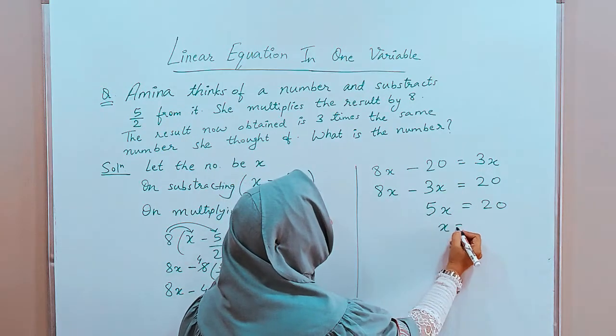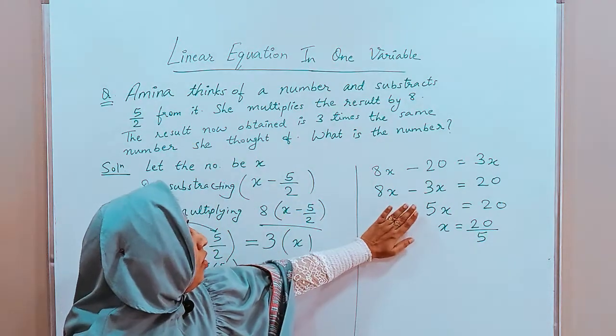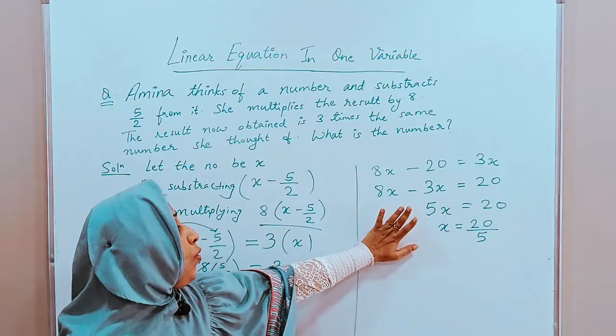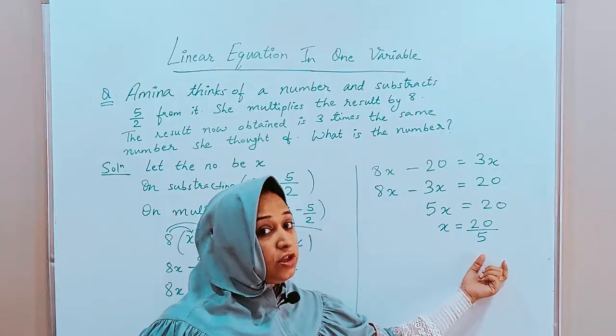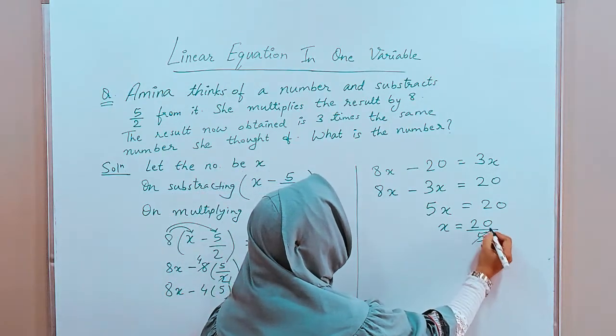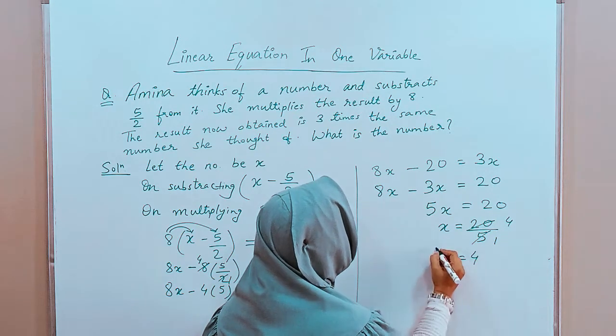Then, x is equals to 20 upon 5. Since, on the LHS side, 5 is in the multiplication. When we take it on the right hand side, it will go in the division. That is the denominator. Now, 20 is the multiple of 5. 5 is 5, 5 is 20. x is equals to 4.